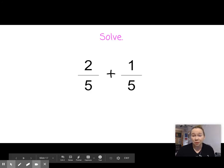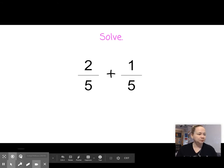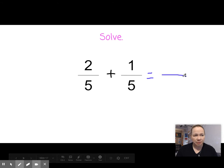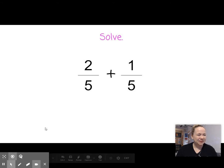Let's solve. Remember what she said. When the denominators are the same, and they are here, they're both five, we leave the denominator and we add the numerators. So this would equal, denominator stays the same, two plus one is three. The denominator stays the same, remember that? Let's try another one.